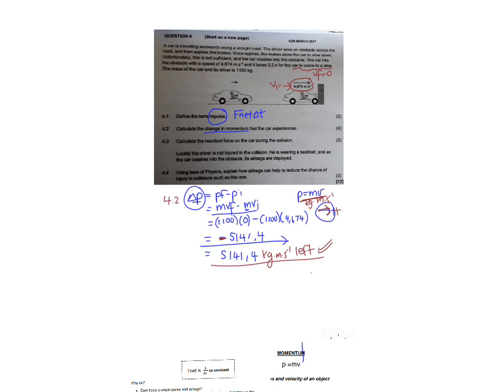They now ask us to calculate the resultant force on the car during the collision. So to find the resultant force, we are going to use the impulse momentum theorem. And the impulse momentum theorem on the data sheet says that the product of the net force and the time is equal to the change in momentum.